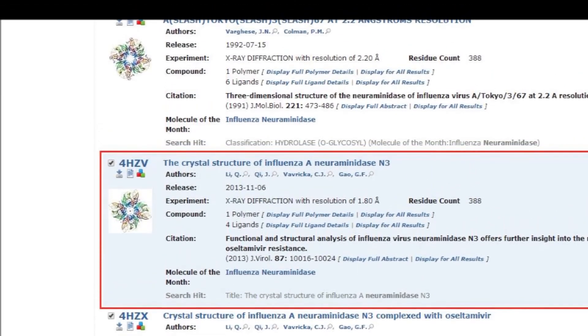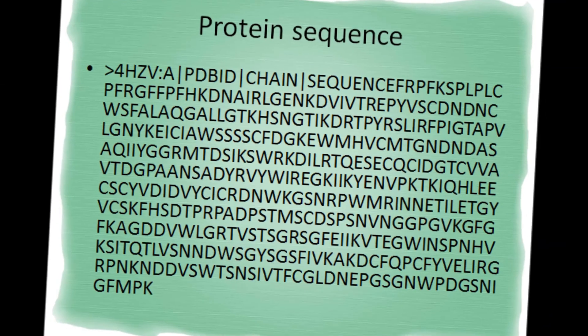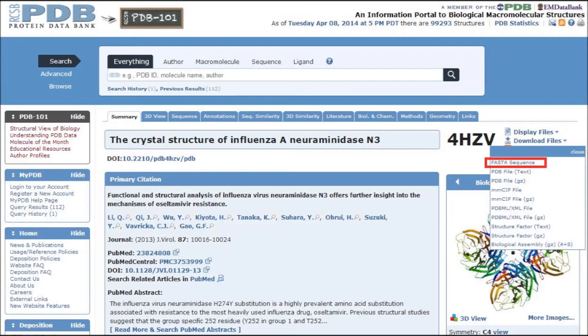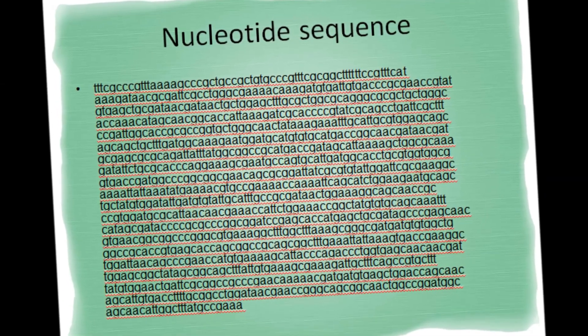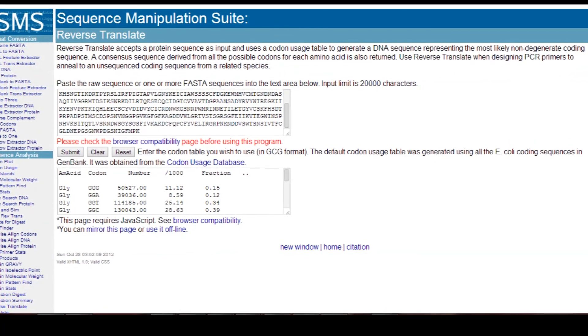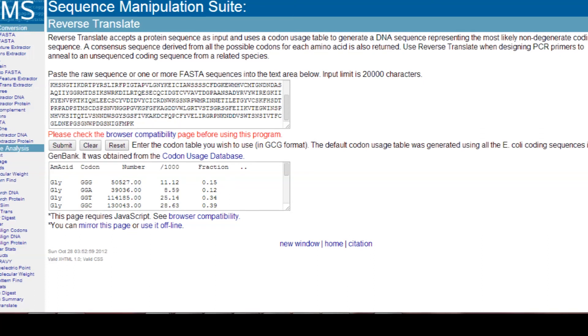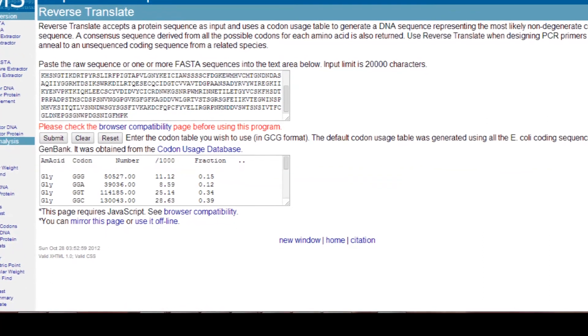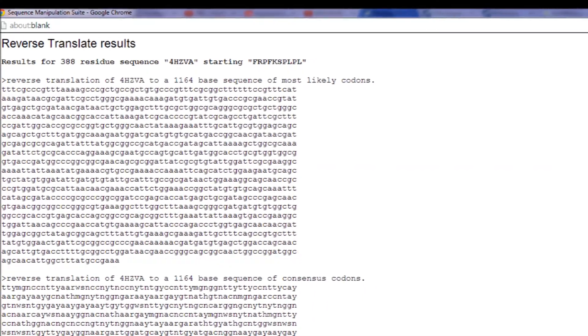As shown here is one example. Key in the selected neuraminidase in the search box. To obtain the protein sequence, click on the FASTA sequence and open up the downloaded file. To get the nucleotide sequence, copy only the protein sequence and paste it on the sequence manipulation suite reverse translate website. Click submit. Here is the results.